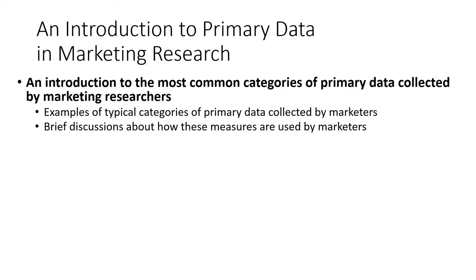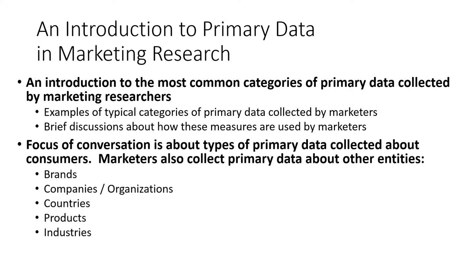I'll introduce you to some of those categories and provide illustrative examples. Today's conversation is focusing on primary data collection when collecting data about consumers. Of course, marketers don't only collect data about consumers. Sometimes we collect primary data about other brands we might be competing with, data about companies or other organizations if we're B2B or industrial marketers. We may collect information at the country level, individual product categories, or aggregate industries.